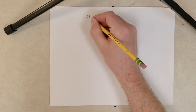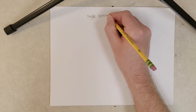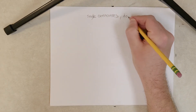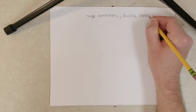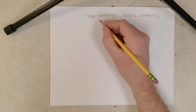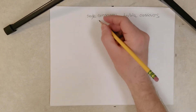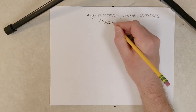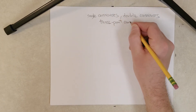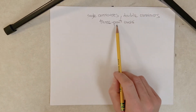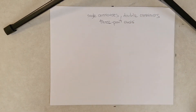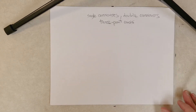Hey everybody. Today we are going to talk about single crossovers, double crossovers, and mapping genes in eukaryotes — mapping genes with the three-point cross. If you can master the three-point cross, you can pretty much understand everything there is to understand in classical genetics. That's why I like to end this part of the course on classical genetics with the three-point cross.